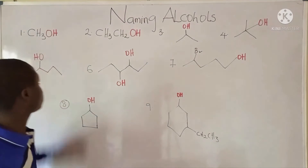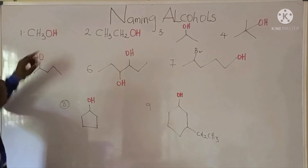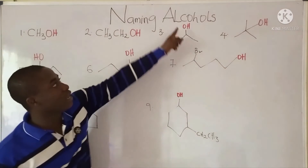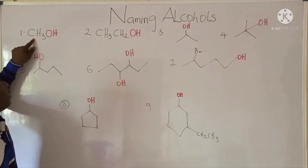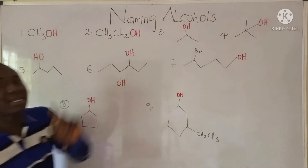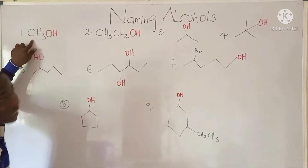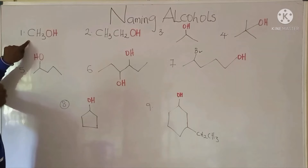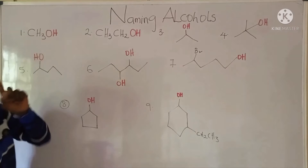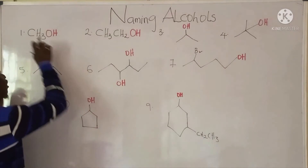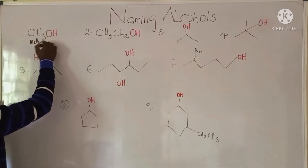First, you can see the first compound here. We have to name it — what will be the name of this compound? First, we need to identify the functional group, which is the alcohol. Now, the CH3 group here is called methyl. It is an alkyl group — basically gotten from an alkane. Removing one hydrogen gives methyl. So this is methyl, and this is the alcohol. So it is called methyl alcohol — that is the common name of this compound.